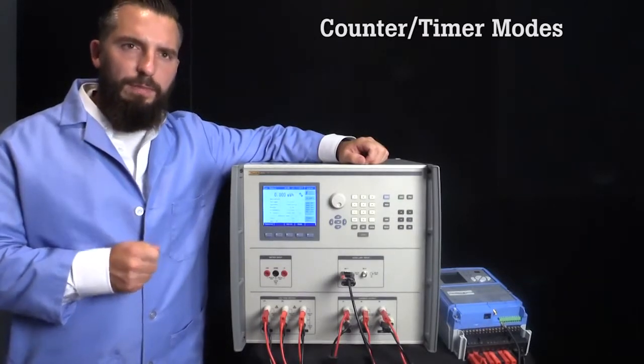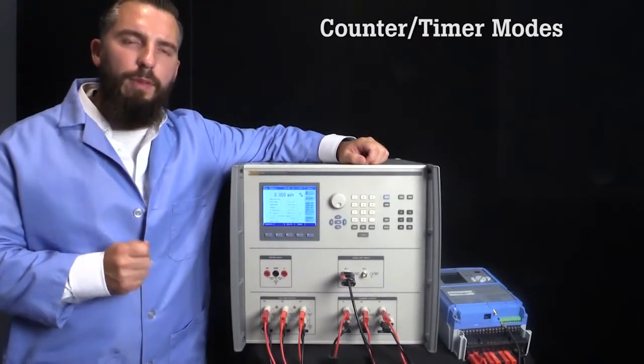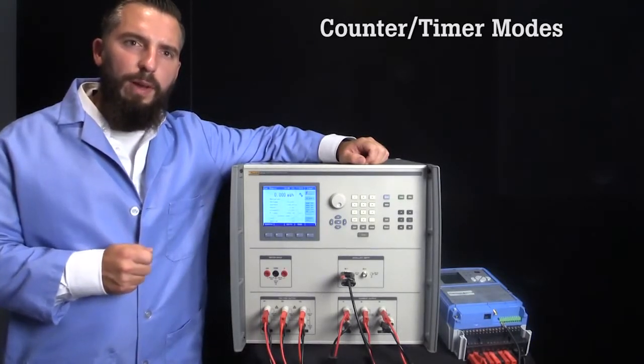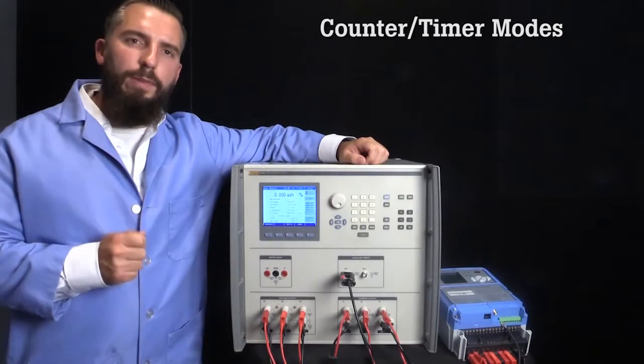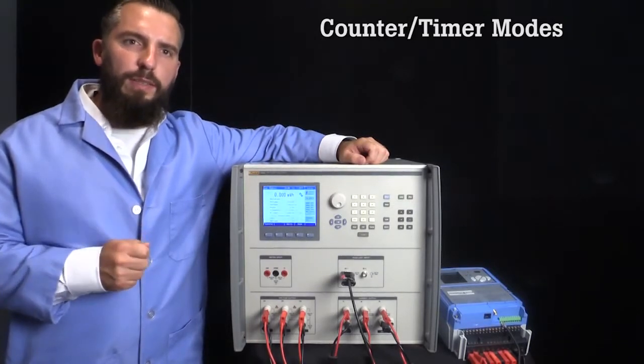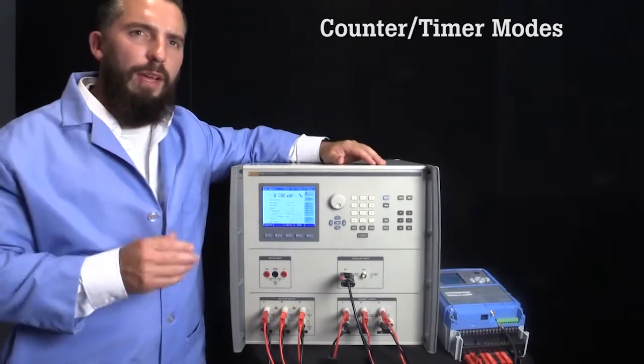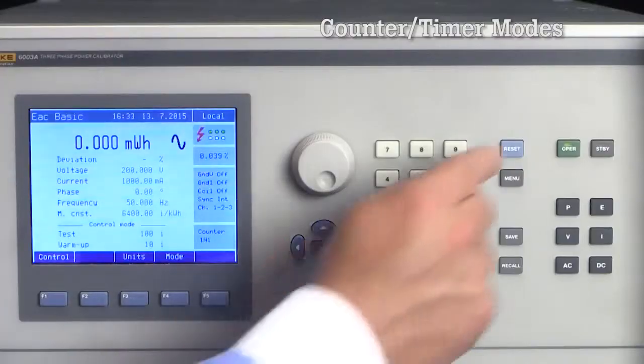I will set the test to receive 10 pulses as a warm-up and run for 100 pulses. In other words, the 6003A will apply power to the UUT, wait for 10 pulses from the UUT, then test until another 100 pulses have been counted. I will now push the operate key to start the test.